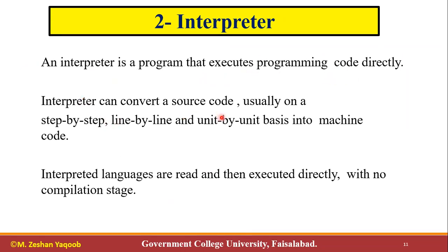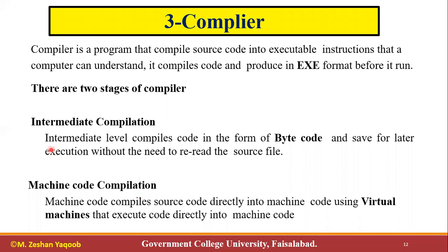An interpreter converts source code step-by-step, line-by-line, or unit-by-unit into machine code. Interpreter languages are read and then executed directly with no compilation stage. A compiler, on the other hand, is a program that compiles code into executable instructions that the computer can understand, producing output in a complete format before execution.